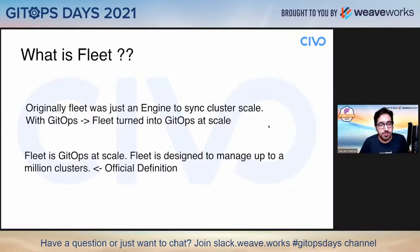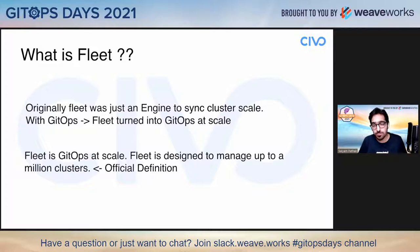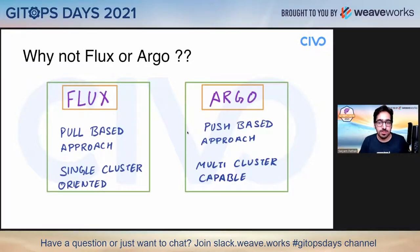What is Fleet? Originally Fleet was just an engine to sync cluster state, but with GitOps becoming the bigger picture — with WeaveWorks pioneering the GitOps field — Fleet also turned into GitOps at scale. Fleet is designed to manage up to one million clusters, which is the official definition from the documentation. They actually wrote a blog about how they achieved that, because managing millions of Kubernetes objects cannot be done with regular approaches.